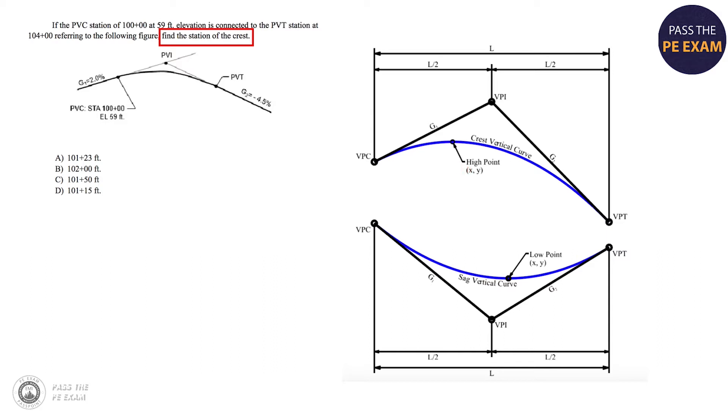Here's why a lot of people are going to get this wrong because they're going to get tricked by the high point or the low point. The high point of a vertical curve is not located in the middle of the curve. It is not L over two that you see here. That's really important to note. A lot of people will just assume that the high point or the low point are located in the middle of the curve.